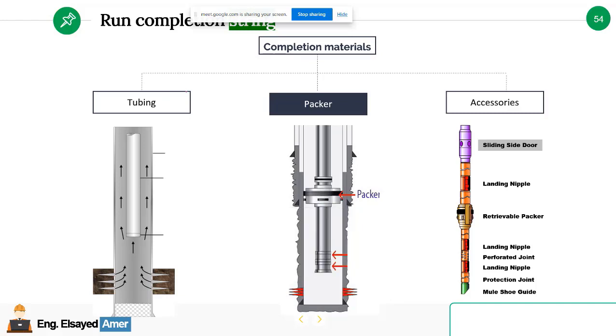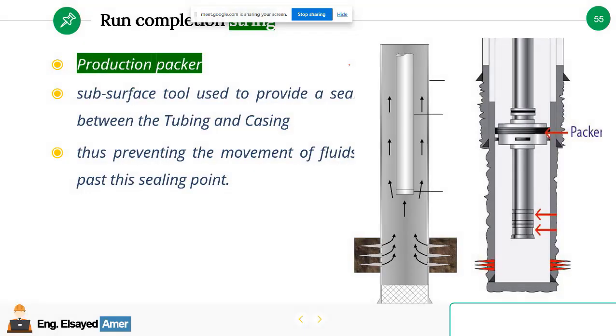Tubing and the packer are essential equipment in running the completion, but there are other accessories that are used for specialized reasons. For future operations on the well, we have to consider installing accessories which will help us carry out special operations on the well in the future. This equipment we discussed yesterday and we will also review.